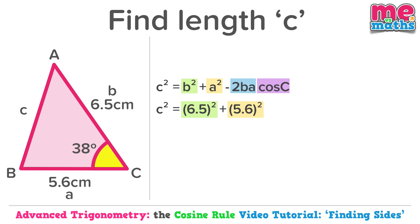Minus—don't forget to open that bracket—2 times 6.5 times 5.6 times cos 38. Then don't forget to close those brackets off properly.